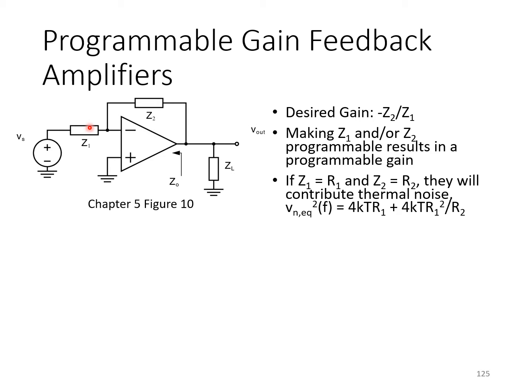In an inverting configuration like this, the gain can be made variable by adjusting either the impedance Z1 or the impedance Z2.